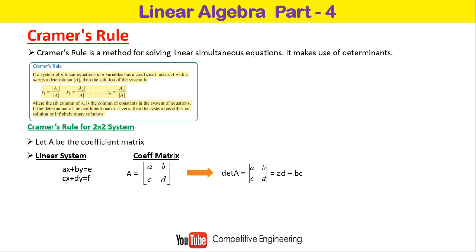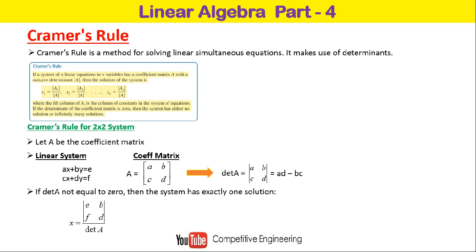The determinant of A equals ad minus bc. For the solution to exist, there are some criteria: if the determinant of A is not equal to zero, then the system has exactly one unique solution. If the determinant is zero, there may be an infinite number of solutions. To find x using Cramer's rule, we compute x = det([e b; f d]) divided by det(A). We replace the first column of A with the right-side matrix [e; f] to get the numerator determinant.